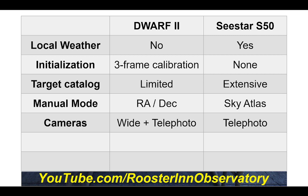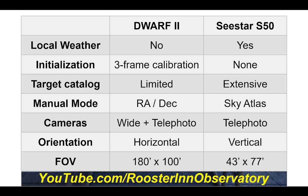A big advantage of the Dwarf: it has two cameras — wide angle and telephoto. The Sea Star has only one. I've used the combination of wide and telephoto many times to find elusive targets. Orientation is a biggie — it takes getting used to the Sea Star's vertically oriented sensor. The field of view is 3° by about 1.something for the Dwarf, 180 by 100 arcminutes, whereas for the Sea Star it's 43 by 77 arcminutes.